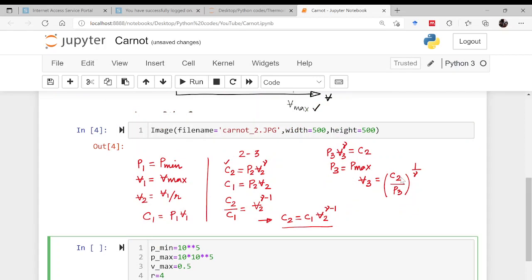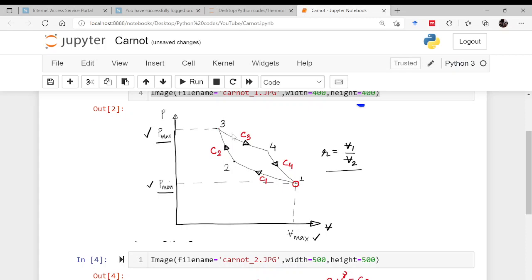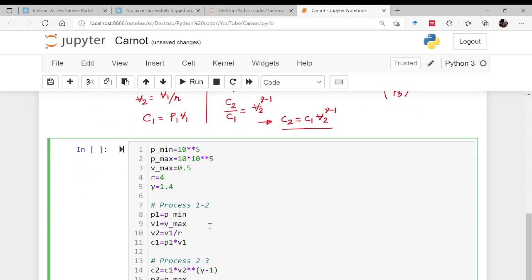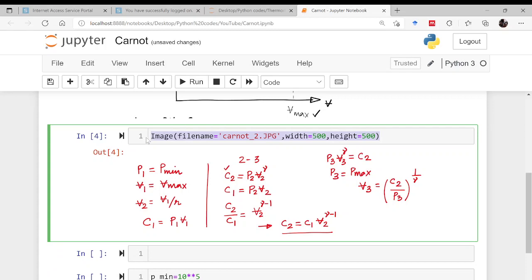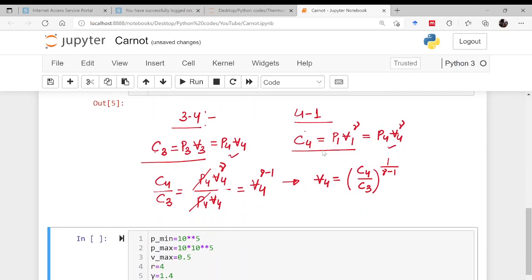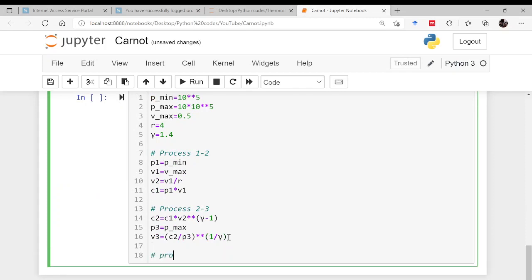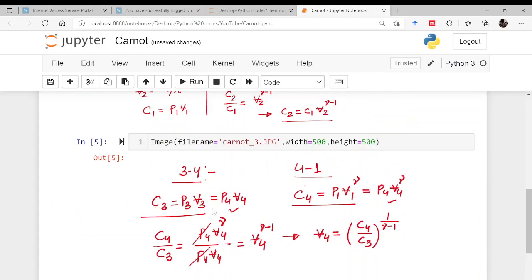Once this is done what else is required? We require the further information, that is from 1 to 2 is done, 2 to 3 is also done. Now 3 to 4 and 4 to 1. If you press A, a cell will be created above this cell. Copy this and the last part of the programming. For the process 3 to 4, first we will be evaluating what is C3. C3 is nothing but P3 into V3.